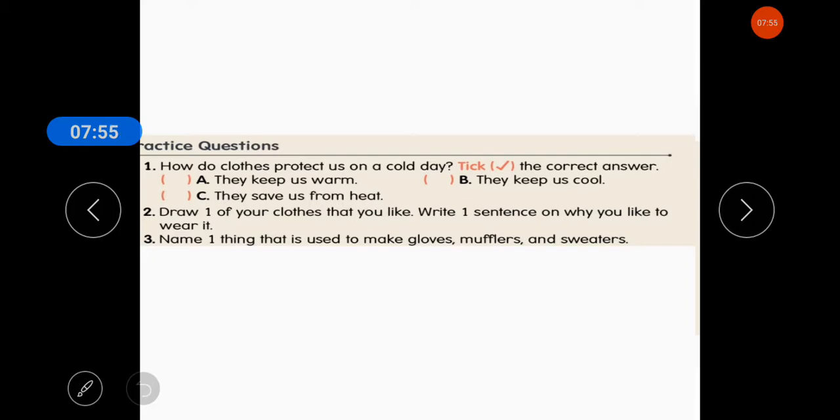So, first question is. How do clothes protect us on a cold day? Tick the correct answer. They keep us warm. So, we will tick this. They keep us cool. So, this is not correct answer. Incorrect. They save us from heat. So, in winters they keep us warm. So, b or c sentences are incorrect. Only a sentence is correct.